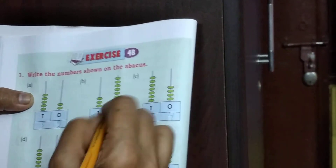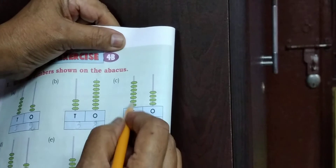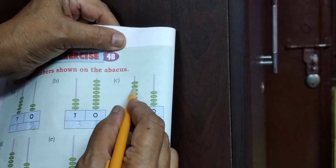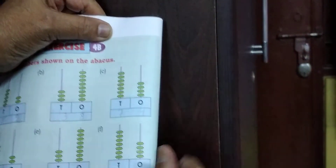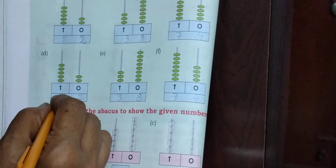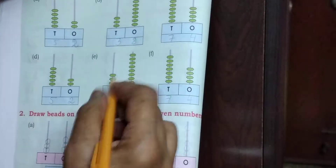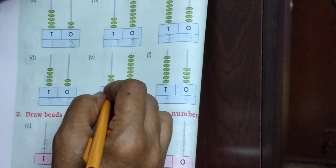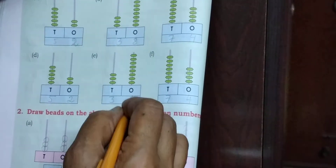Count the number. 3 ones: 1, 2, 3, 4, 5, 6, 7, 8. 3 tens, 8 ones. 38.